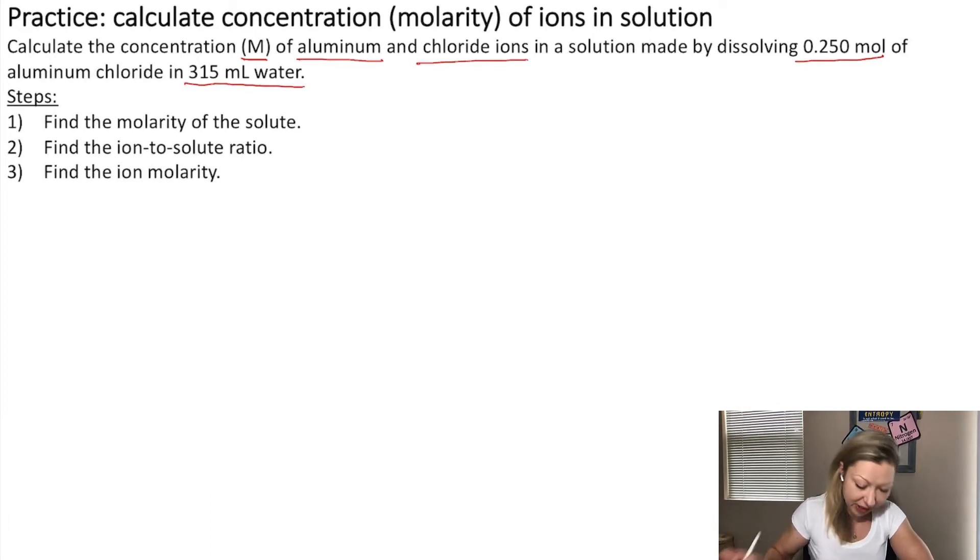So, how do we solve this? Here are the steps. The first step is that we have to find the molarity of the solute. What is the solute in this case? Well, our solute is going to be aluminum chloride right here, which is going to have a formula of AlCl3 because we know that aluminum ions have a charge of 3 plus and chloride ions have a charge of 1 minus. So, in order to form a neutral ionic compound, we need 1 aluminum cation and 3 negatively charged chloride ions or anions.